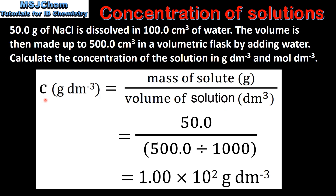First we'll calculate the concentration in grams per decimeter cubed. We divide the mass of the solute in grams by the volume of solution in decimeters cubed. To convert from centimeters cubed to decimeters cubed we divide by 1000. This gives us a concentration of 1.00 times 10 to the 2 grams per decimeter cubed.